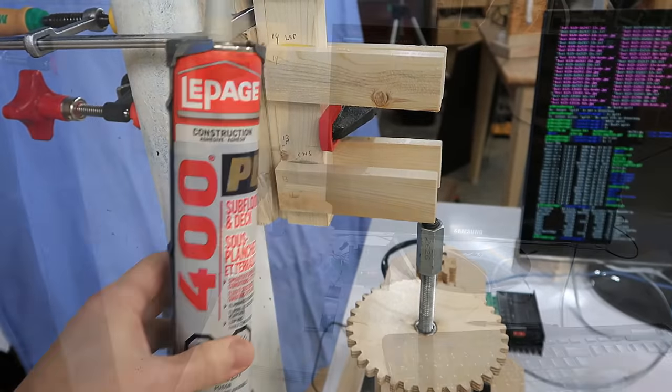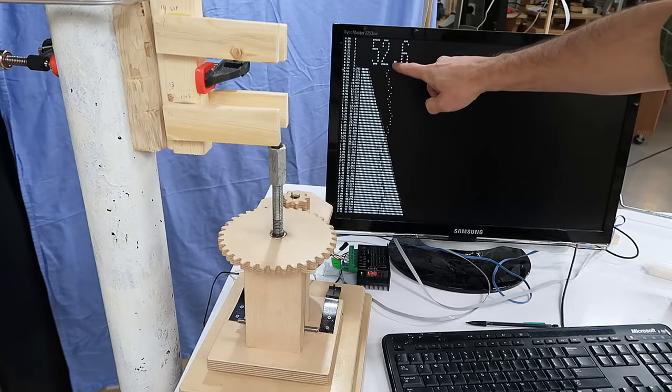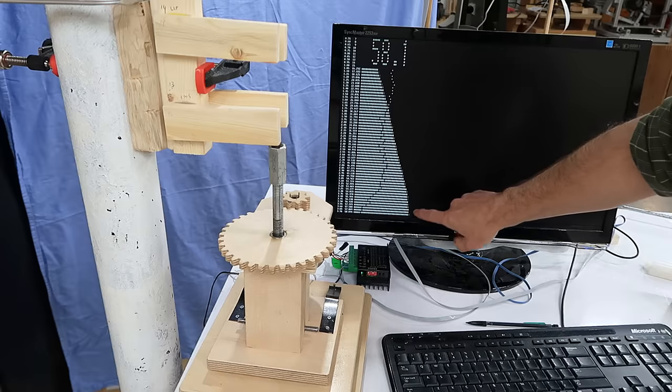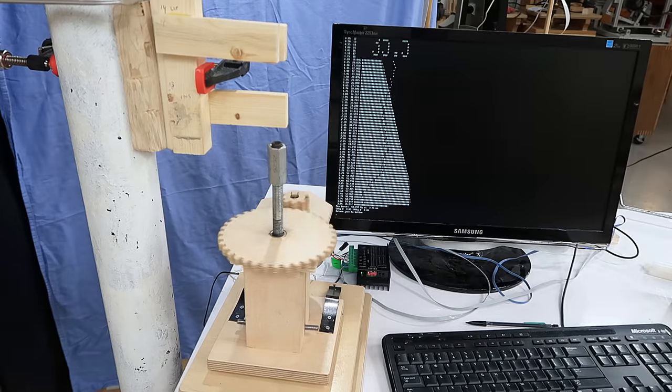First up, construction adhesive. That's John Heist's favorite. This shows the current force in kilograms, and this kind of graphs it with just a spectrograph, and it's done. Broke at 58 kilograms.